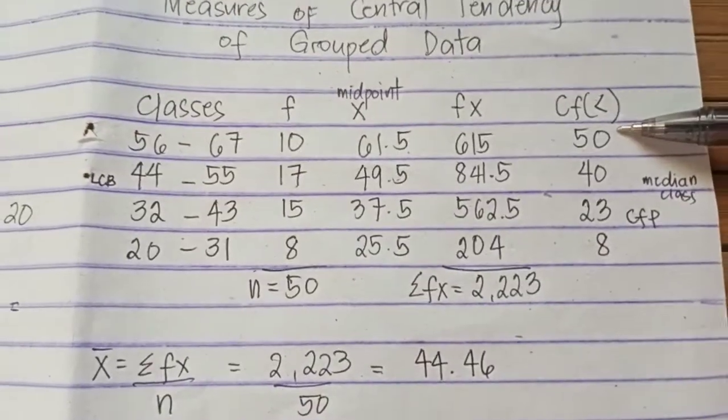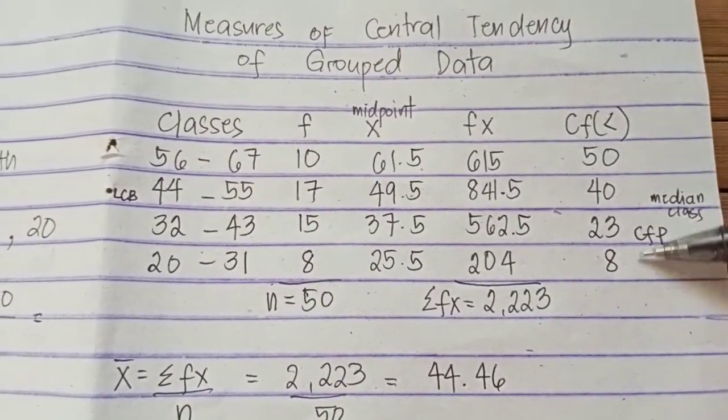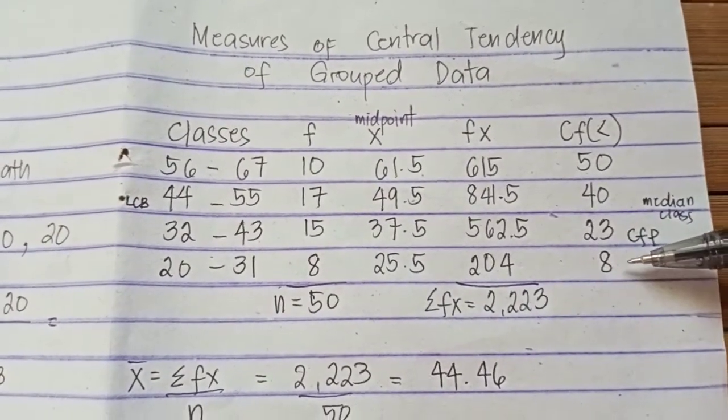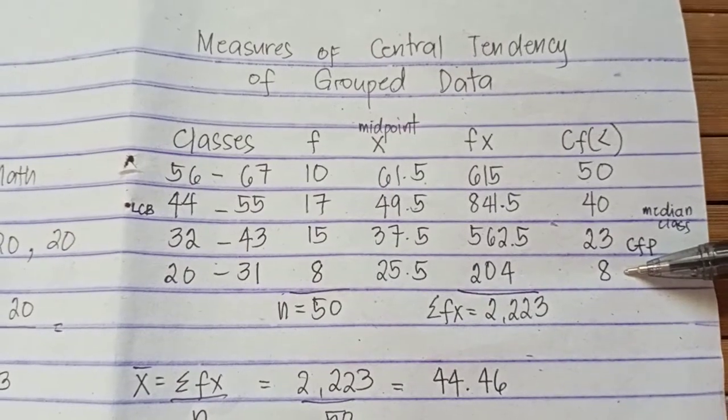Then, last column would be the cumulative frequency less than. We discussed this already under statistical presentation of data. So, just add the frequency successively.